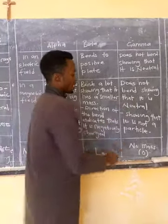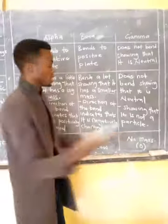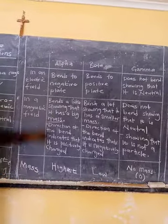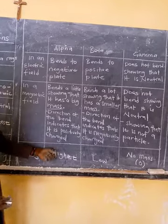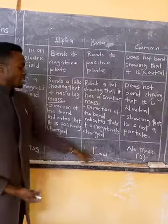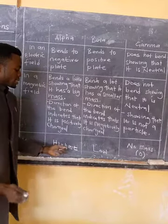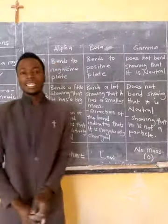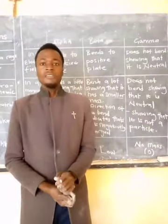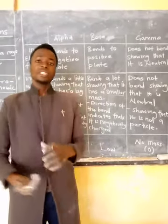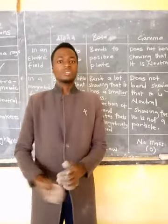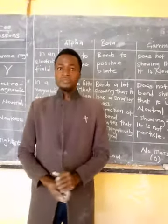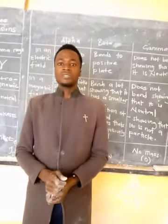Gamma is not considered a particle because its mass is zero — a particle is something that has mass. For mass: alpha has the largest mass, beta has a lower mass than alpha, and gamma has no mass, which is why it can never be affected by electric or magnetic fields. Make sure you understand all these properties — if asked to state the properties of alpha, beta, or gamma, you must be able to state all of them. That's where we end today. Take care of yourselves, thank you.